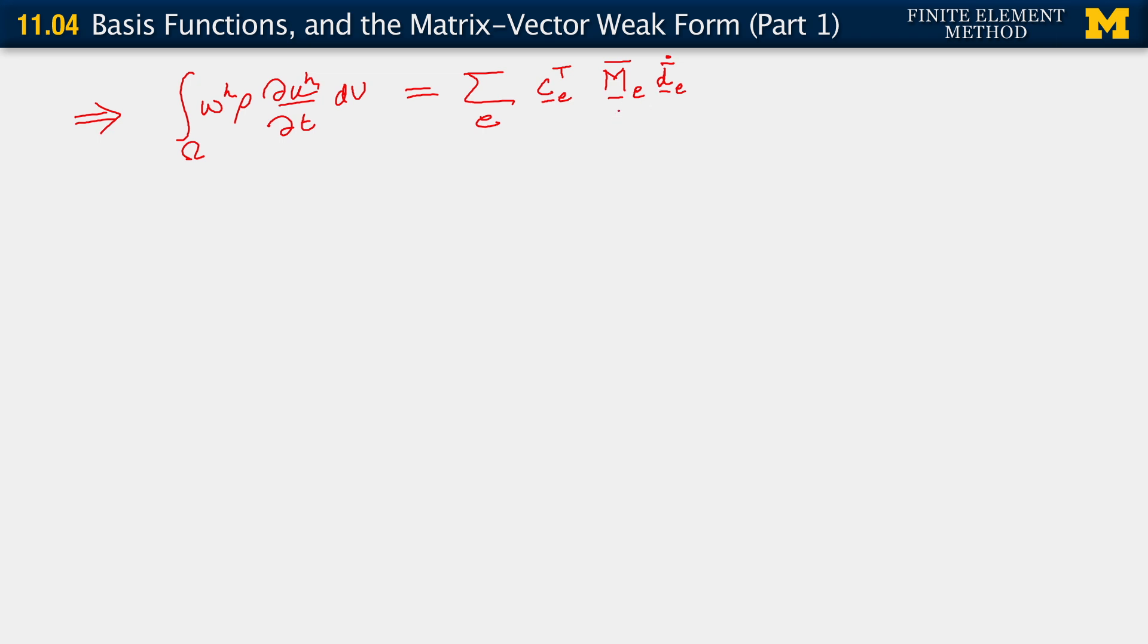Okay? That's all. Now, this matrix is what is called often the mass matrix. Okay? In the context of finite element methods, any such matrix that's obtained by directly multiplying the basis functions, no derivatives, right? No spatial derivatives on the basis functions.